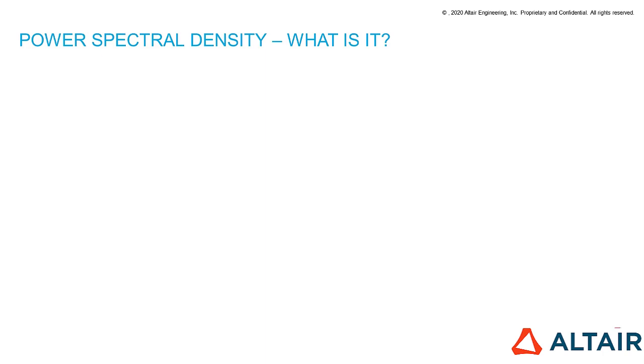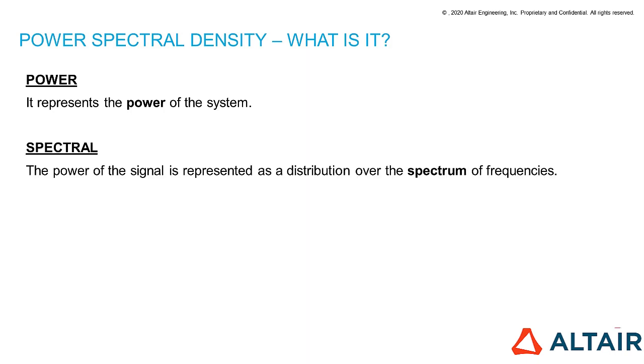The first question we have to answer is, what is power spectral density? We can get its definition by its name. The first word is power, which means that we are representing the power of our signal. The second word is spectral. In fact, the power of the signal is represented as a distribution over the spectrum of frequencies.